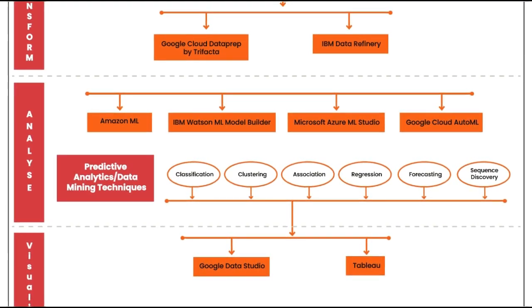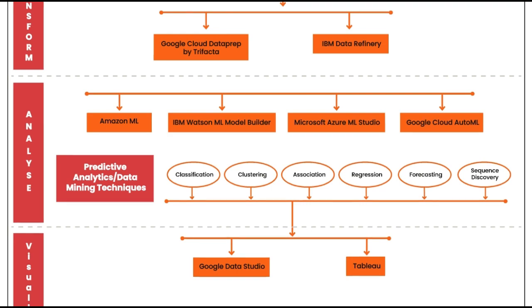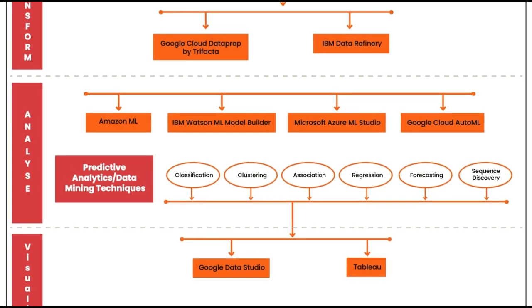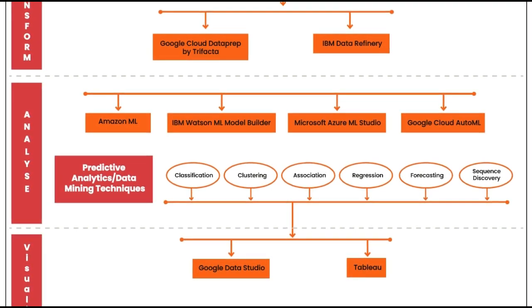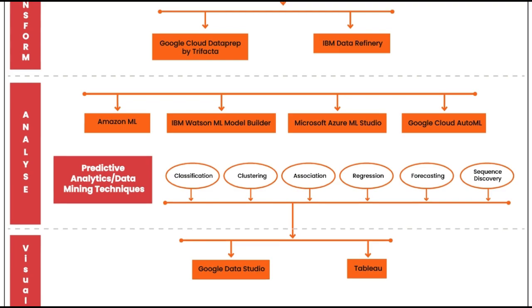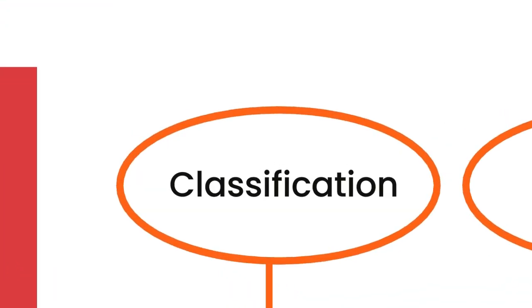Each data mining technique can perform one of the following types of data modeling. Classification: in data mining, classification is considered an instance of supervised learning — that is, learning where a training set of correctly identified observations is available.